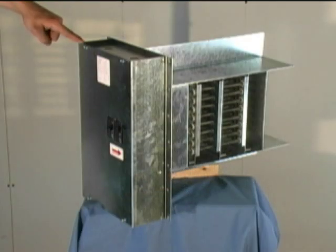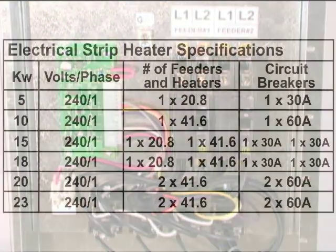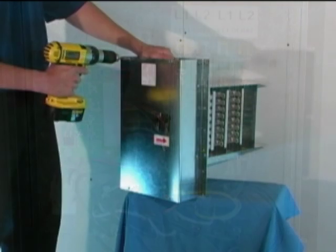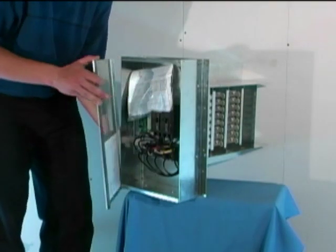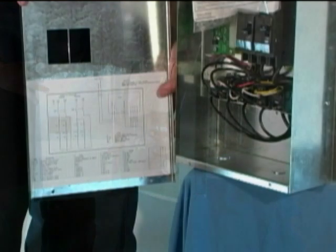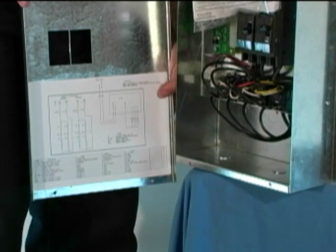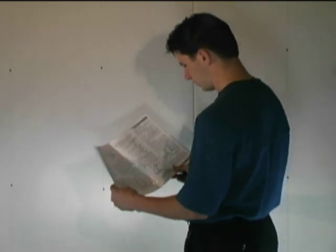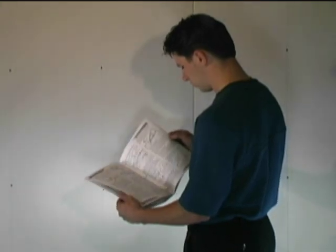The electric coils require 240 volt single phase connections, and the amperage can range from 30 to 60 amps depending on the model being used. With all the power sources disconnected to the electric coil, remove the access panel. The wiring diagram is on the inside of the electric coil access panel, or refer to the installation guide. All wires shall be run and sized in accordance with local electrical code laws.